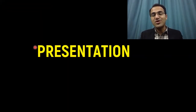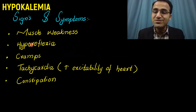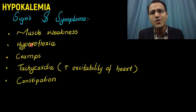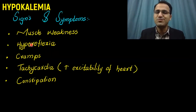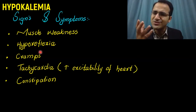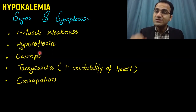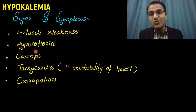Hypokalemia presents with muscle weakness. Most symptoms involve muscle weakness, muscle breakdown, and rhabdomyolysis, with elevated CPK levels in some cases. You would also see hyporeflexia, because the muscles are not working properly. This is because potassium is a very important component in the physiology of muscle contraction.